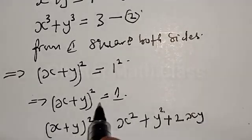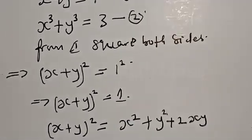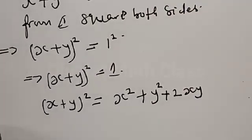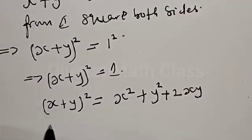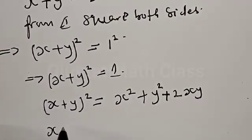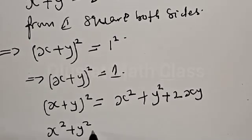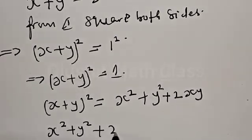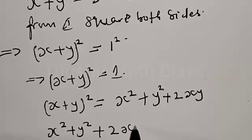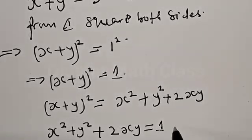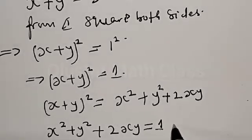Therefore, equation 1 can be rewritten as s squared plus y squared plus 2xy equal to 1. Let's call this equation 3.